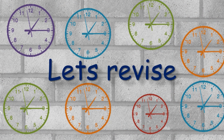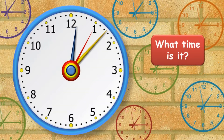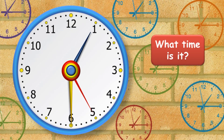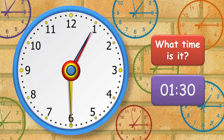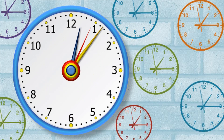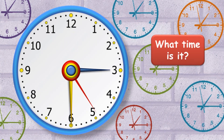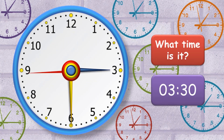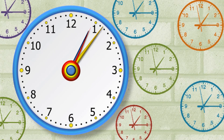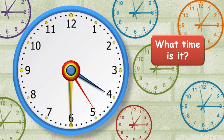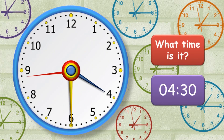Let's revise! What time is it? It's 1:30. What time is it? It's 2:30. What time is it? It's 3:30. What time is it? It's 4:30.